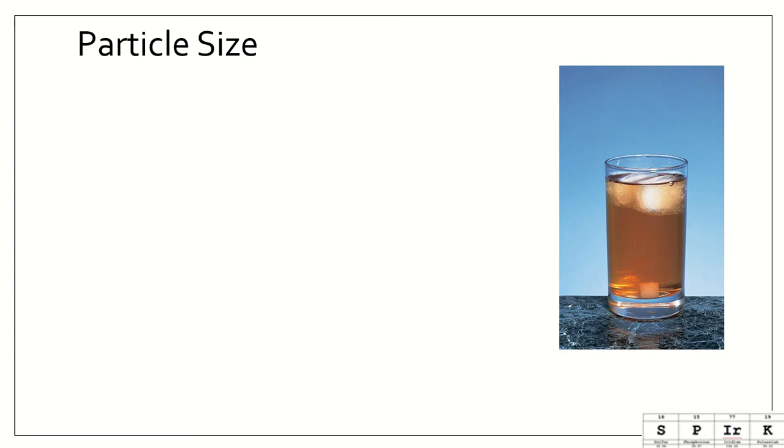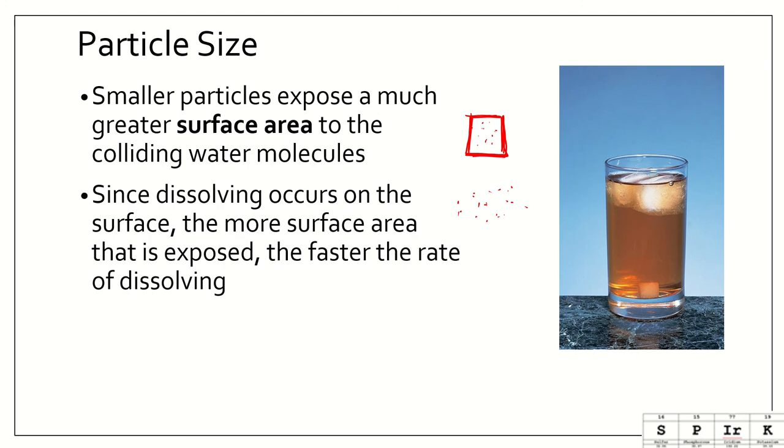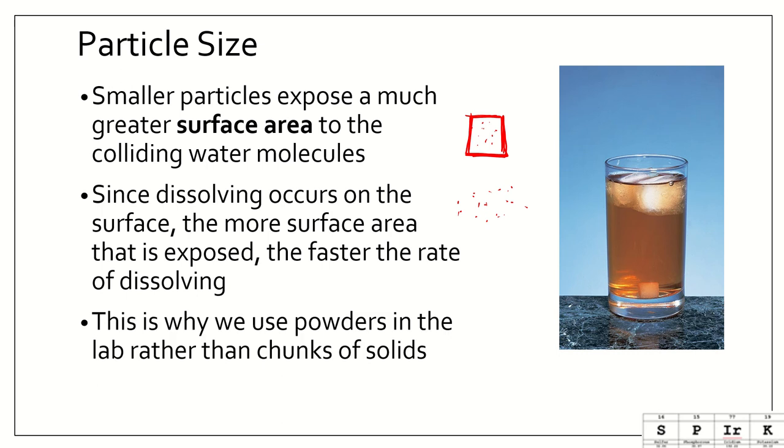And the last one we're going to talk about is particle size. So you may have seen, I'm sure, come across at some point, sugar cubes versus sugar packets. So they are about the same amount of sugar. However, a sugar cube is very rigid, whereas a sugar packet is just the tiny little particles of sugar. So smaller particles expose much greater surface area to the colliding water molecules. Because think, in a cube of sugar, the only exposed edges are the surface. None of these little sugar particles are exposed. But in a sugar packet where it's crushed up, it is much more exposed. So since dissolving occurs at the surface, the more surface area that is exposed, the faster the rate of dissolving. This is why we use powders in the lab rather than chunks of solids.